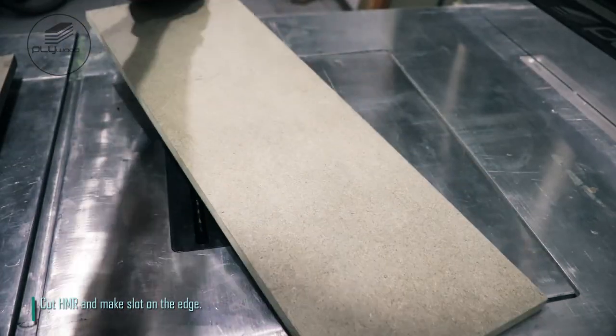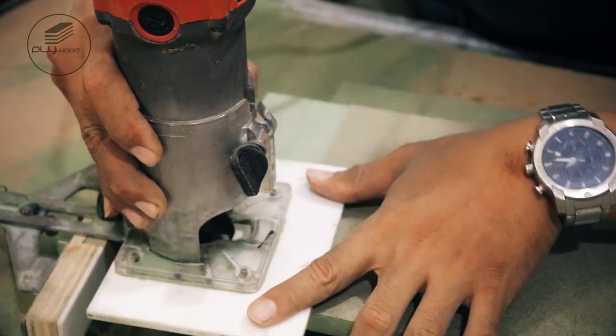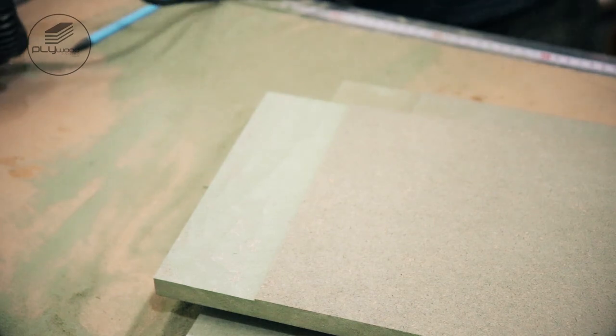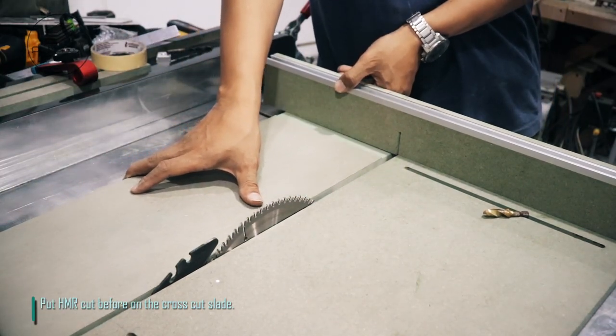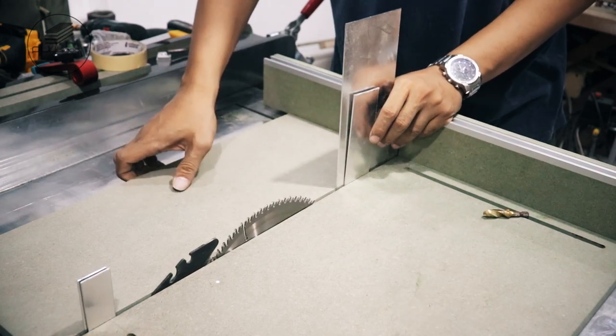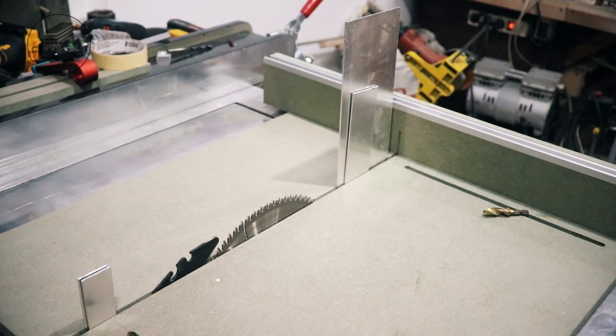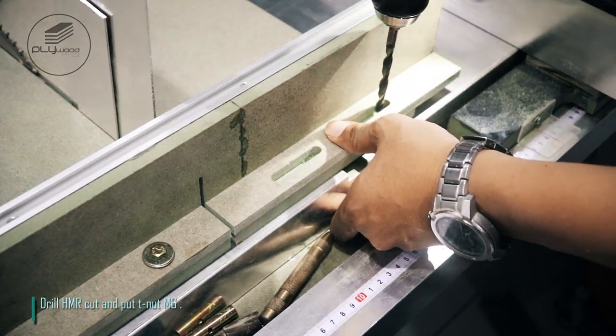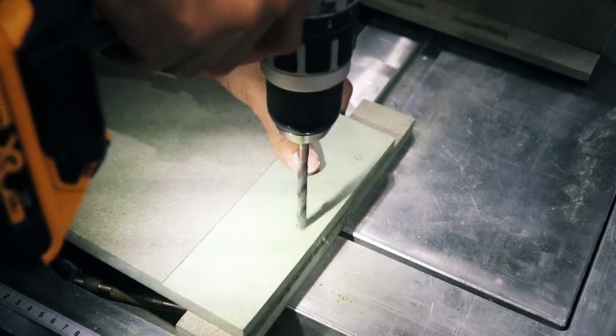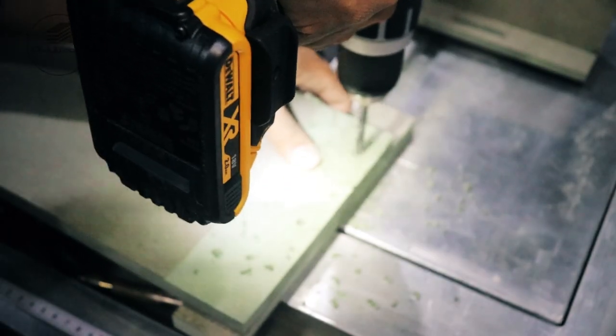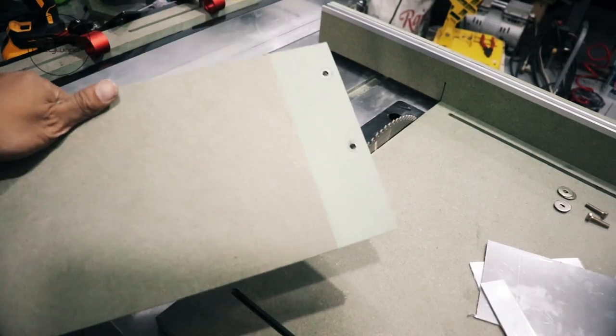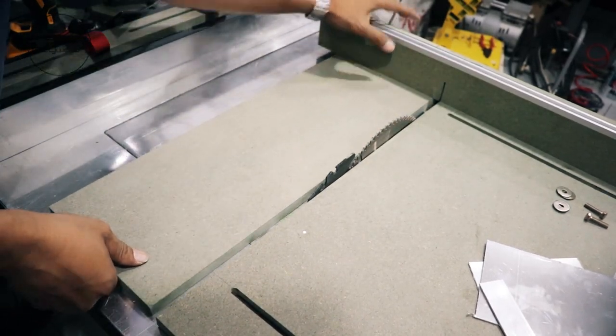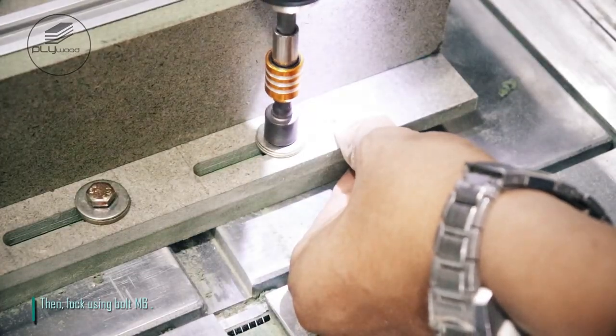Cut HMR and make slot on the edge. Put HMR cut before on the cross cut sled. Drill HMR cut and put T-nut M6. Then, lock using bolt M6.